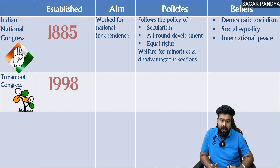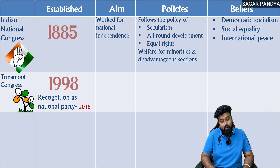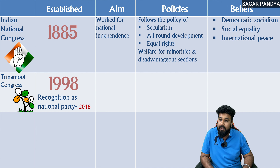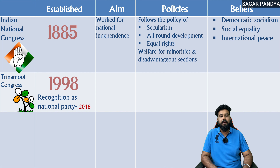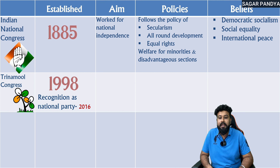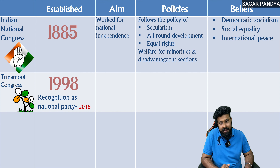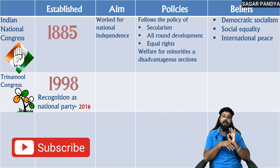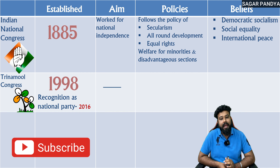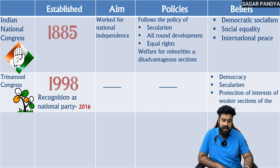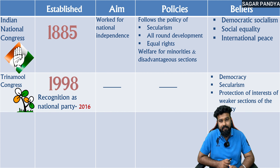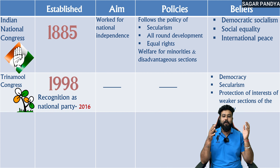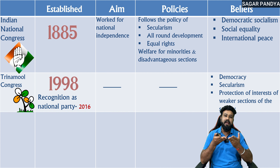Trinamul Congress was established in 1998. It received national party recognition in 2016, though more recently that recognition has been removed — but as per the textbook it is listed as a national party. Their main policy and belief is democracy — government of the people, for the people, by the people — secularism meaning every religion being equal, and protection of the interest of weaker sections of society.